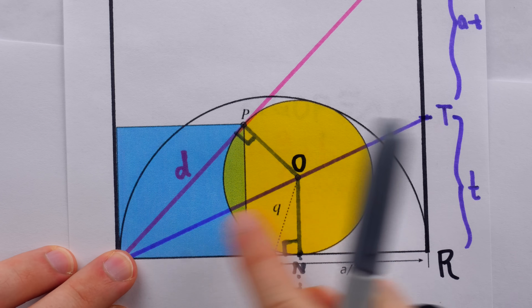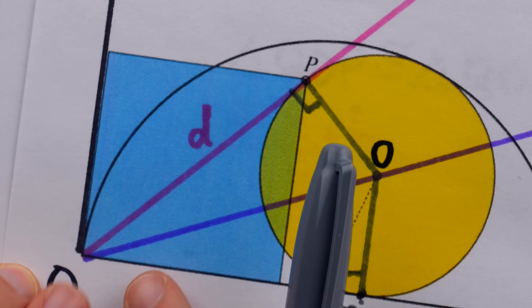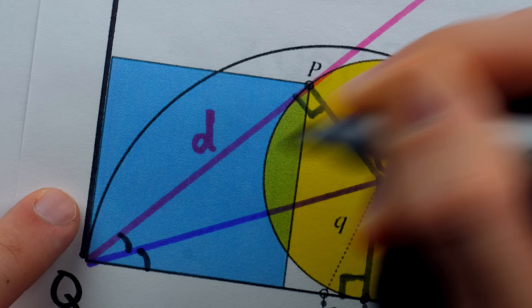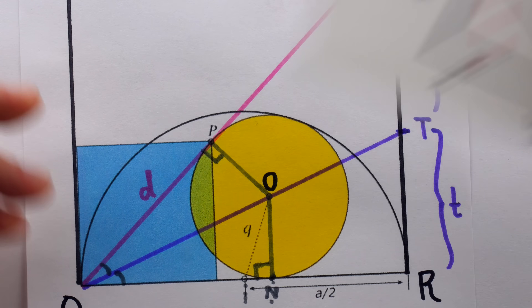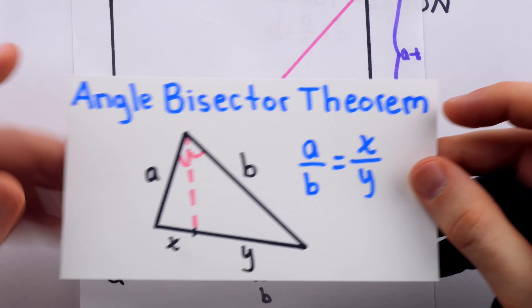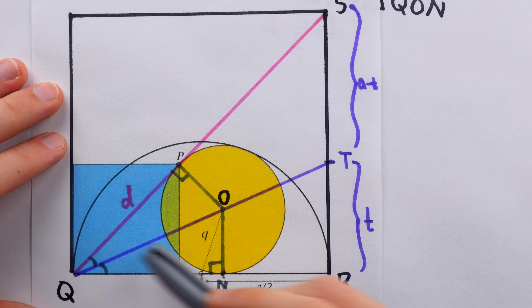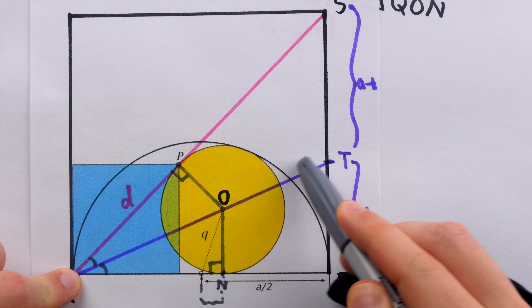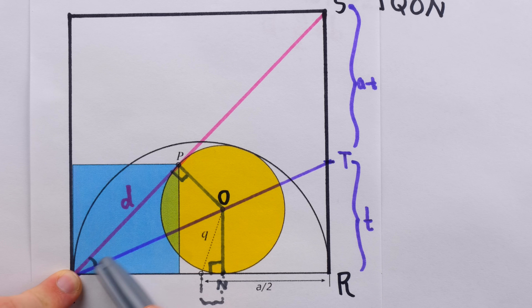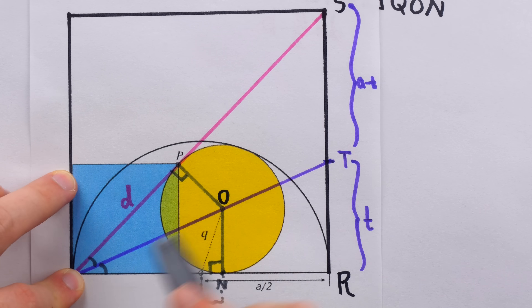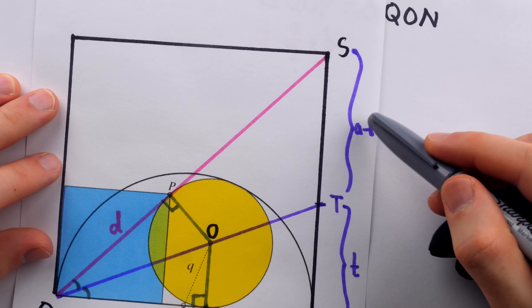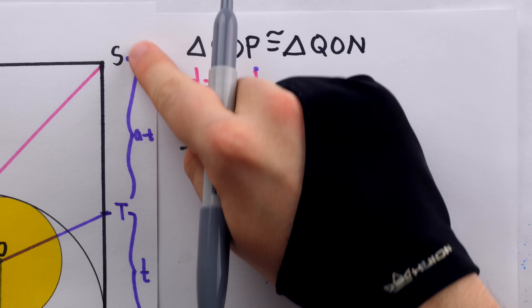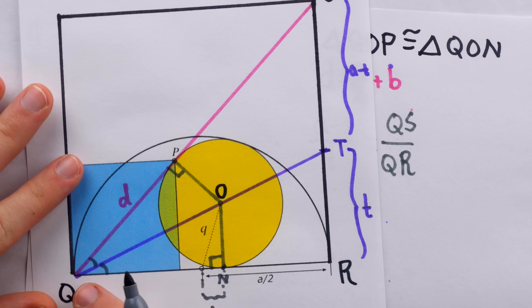Because we've argued those two right triangles are congruent, we know this purple line is actually bisecting this angle, so those two angles are congruent and we can use the angle bisector theorem. We are applying it to the big triangle SQR. The angle SQR of that triangle has been bisected by the purple line, so the ratio into which the angle bisector cuts the opposite side must equal the ratio of the other two sides. So A minus t over t equals QS over QR.